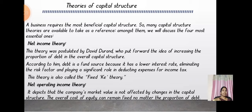The Net Operating Income Theory states that a company's market value is not affected by changes in capital structure. The company's market value will not be affected by changes in the proportion of debt, and the overall cost of equity can remain fixed regardless of the proportion of debt.